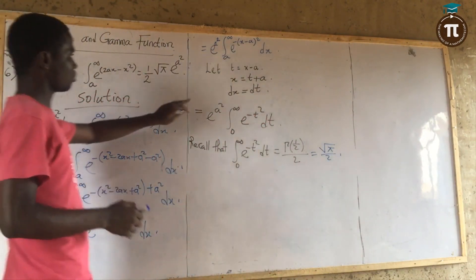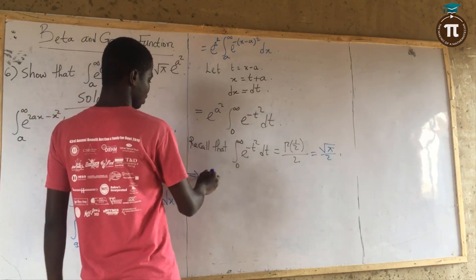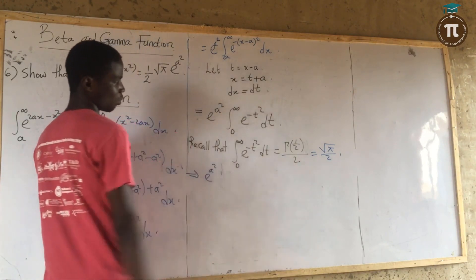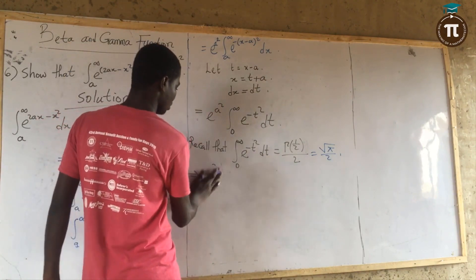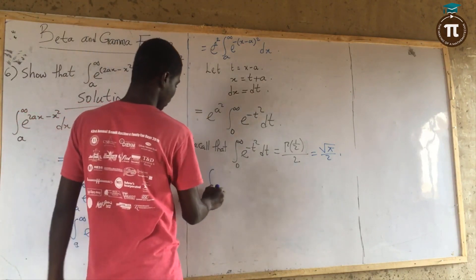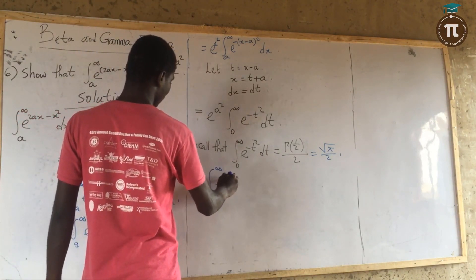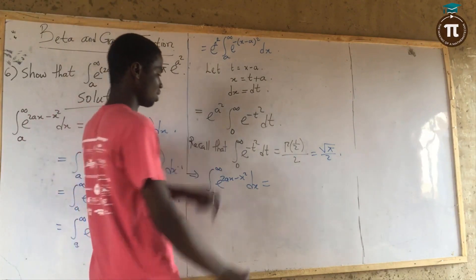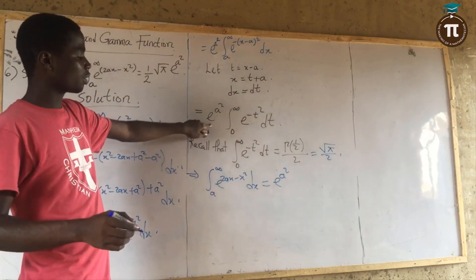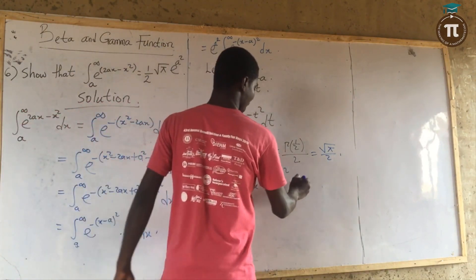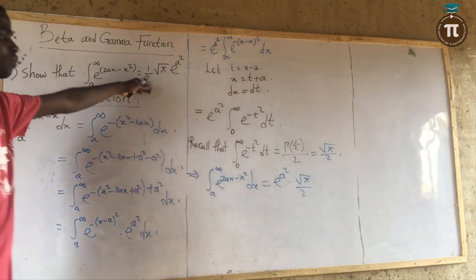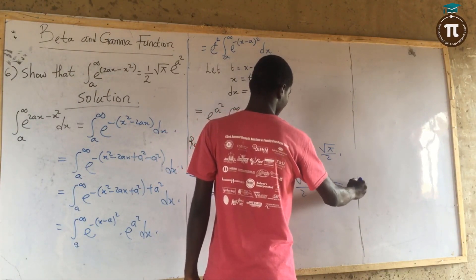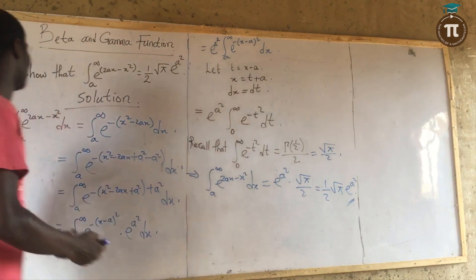So this integral equals root pi over 2. That means our integral from 0 to infinity of e raised to power (2ax minus x squared) dx equals e raised to power a squared multiplied by root pi over 2. Therefore the answer is one half times root pi times e raised to power a squared. That completes question 6.